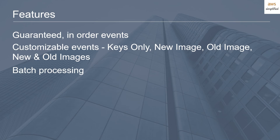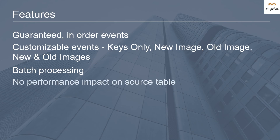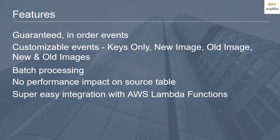It supports batch processing. If you hook this up to a Lambda function, you can get one invocation per dozen, per 50, per 100 events — that's up to you to customize. There is absolutely zero performance impact on the source table. Your original DynamoDB table isn't going to get slower because of this and it's not going to cost anything extra at the DynamoDB level. DynamoDB streams are completely independent of the DynamoDB table they're attached to, and it's super easy to integrate with AWS Lambda functions.